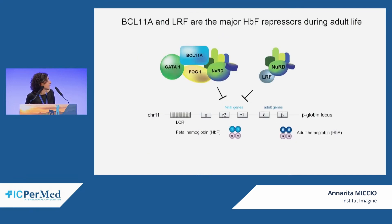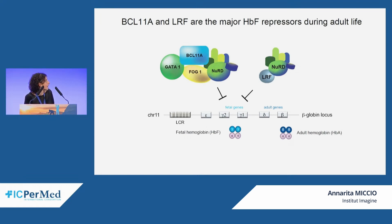Several nuclear factors are known to be involved in repression of the fetal gamma-globin gene in adult life. In particular, BCL11A and LRF are the major transcriptional repressors that in adult cells bind the gamma-globin promoter and repress gene transcription.